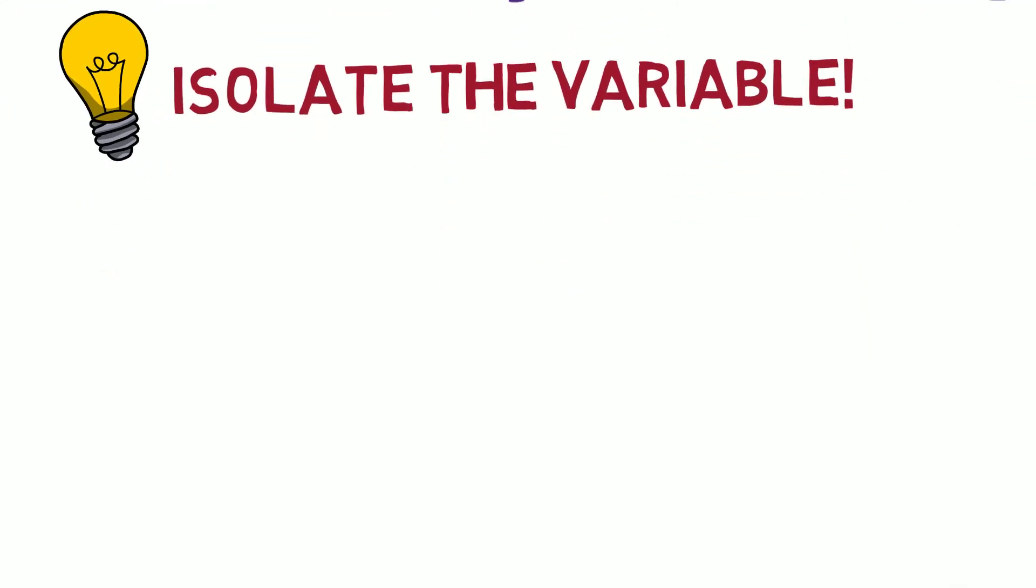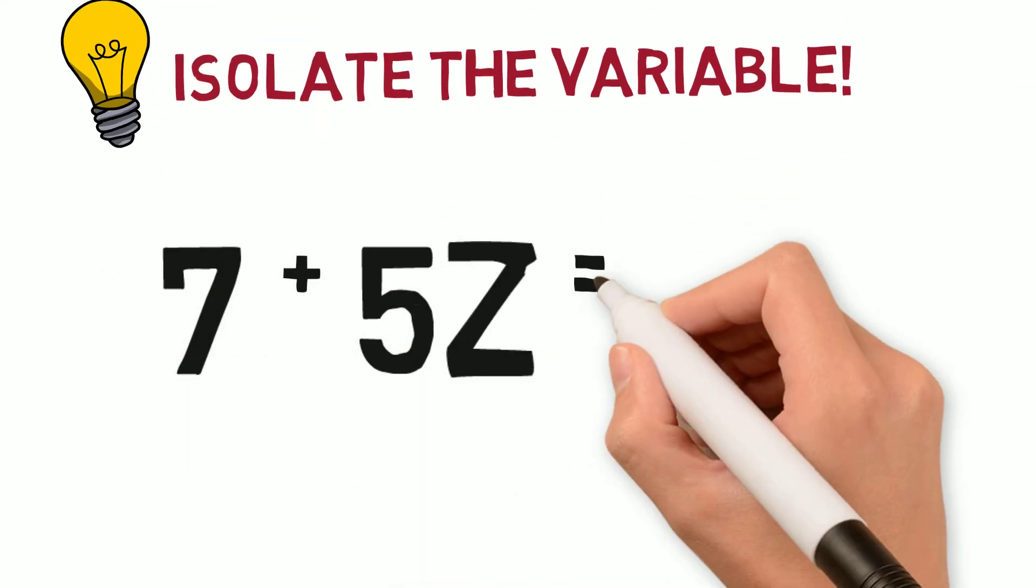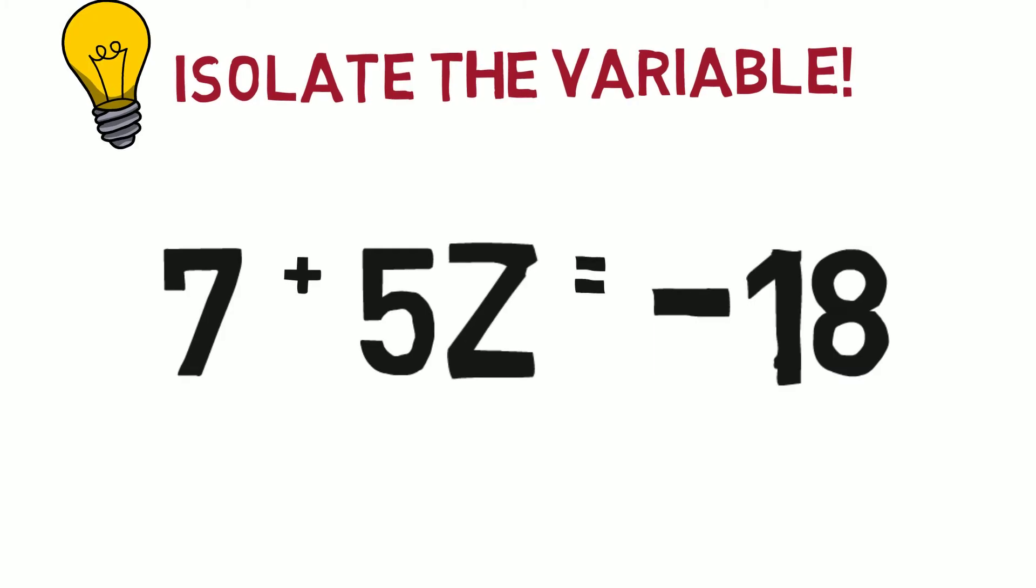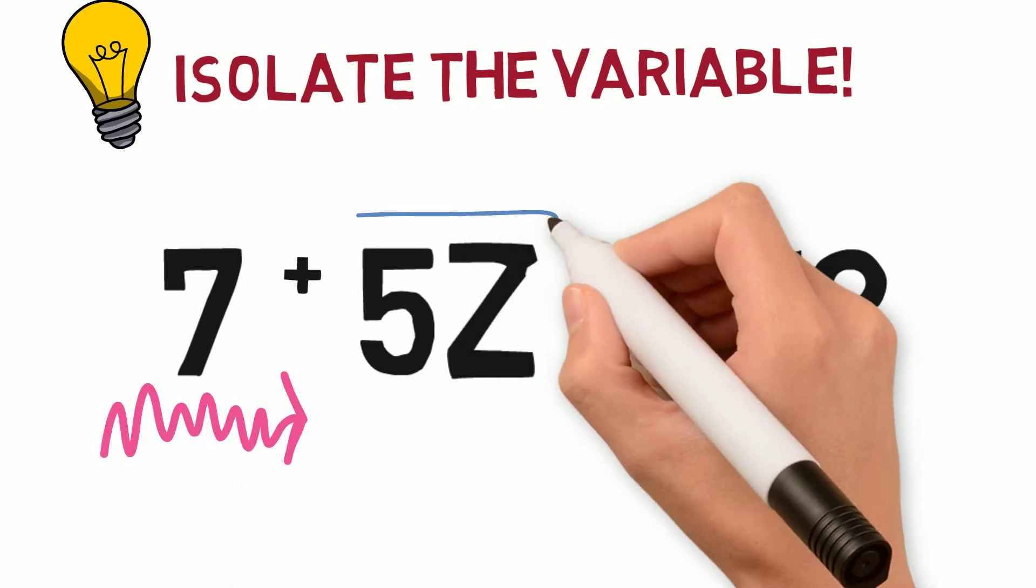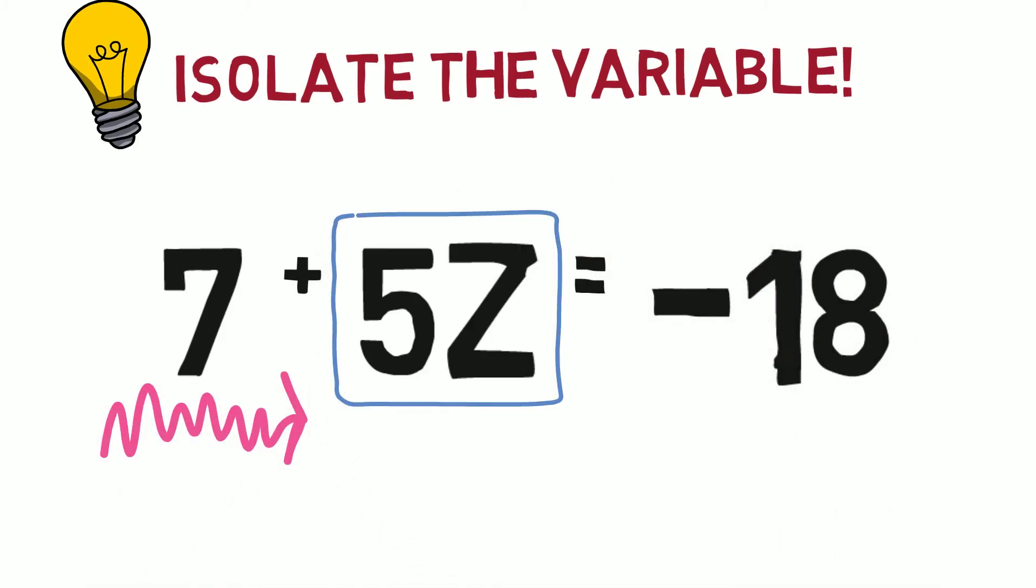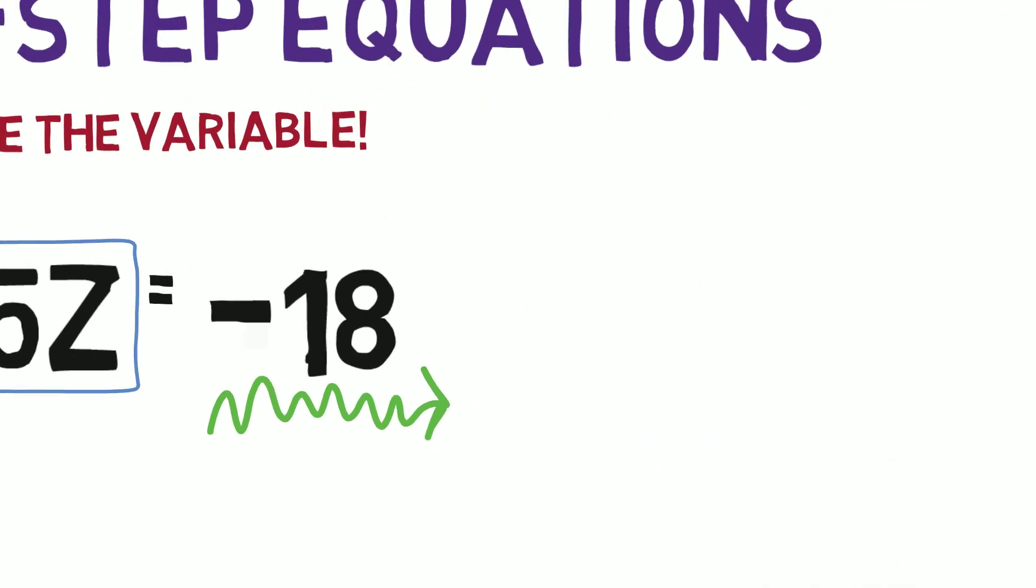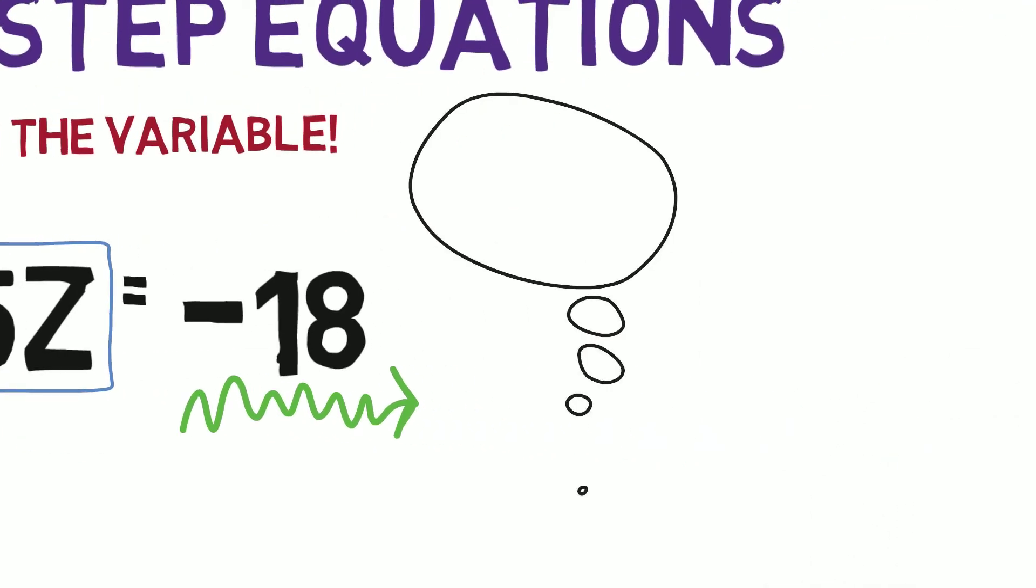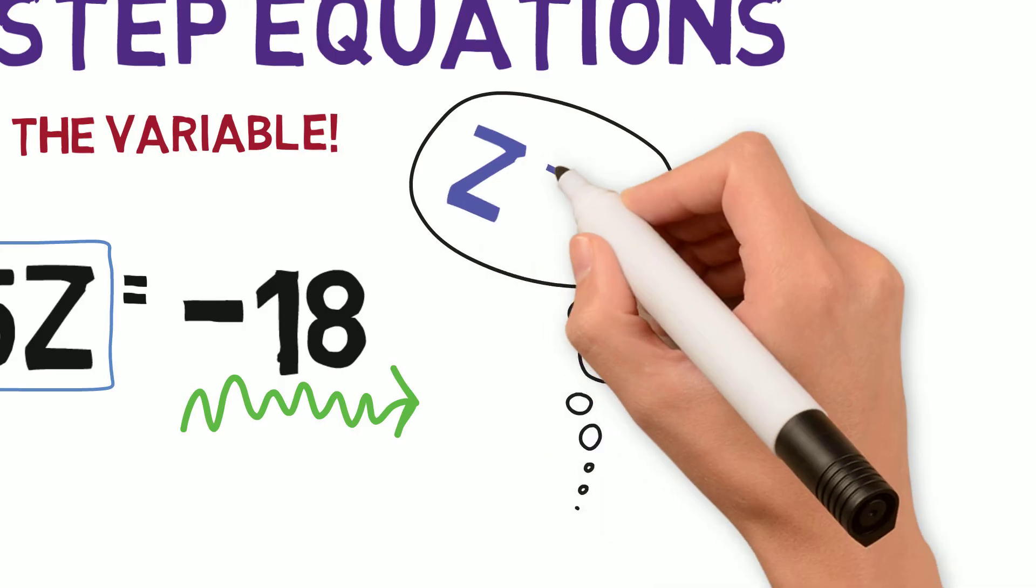Take the equation 7 plus 5z equals negative 18 as an example. We know that 7 plus 5 times some number equals negative 18. What does this mean? It means we have to figure out what value z equals to make this equation true.